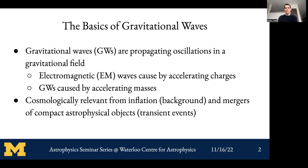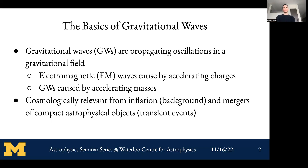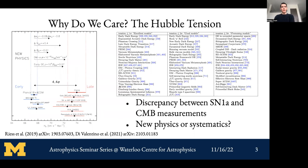To get us on the same page: gravitational waves are propagating oscillations in a gravitational field, directly analogous to electromagnetic waves from accelerating charges — here it's accelerating masses. There's a stochastic background from supermassive black holes and B-modes from inflation, but today we're talking specifically about transient waves emitted by compact astrophysical objects.